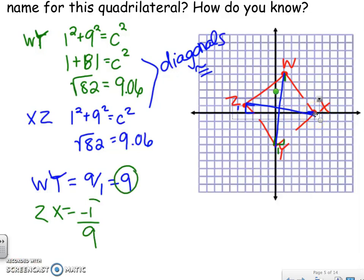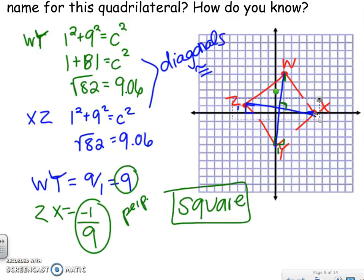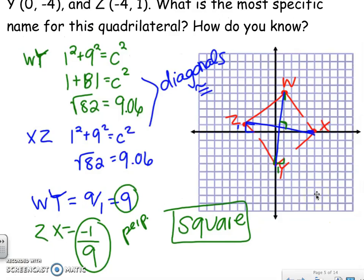I notice that 9 and -1/9 are perpendicular — opposite reciprocals — so there is a 90-degree angle. I've proved the diagonals are congruent and the diagonals are perpendicular. Therefore, it is a square. The justification: because the diagonals are congruent and the slopes of the diagonals are perpendicular, therefore it is a square.